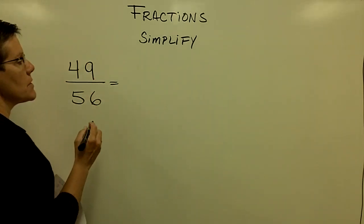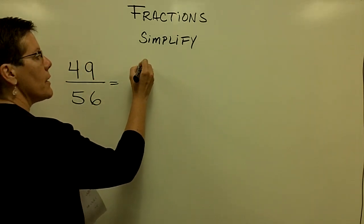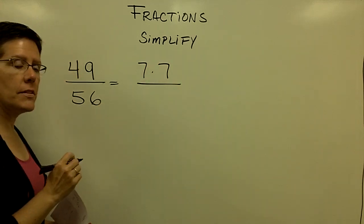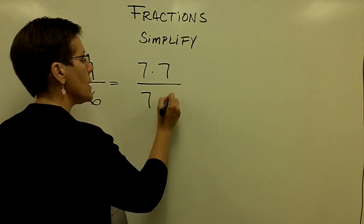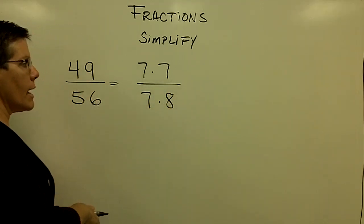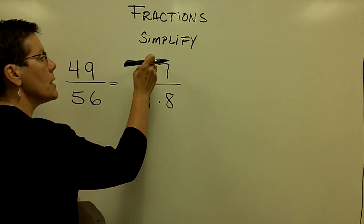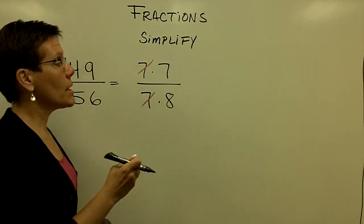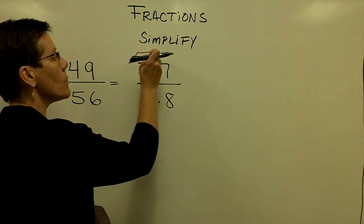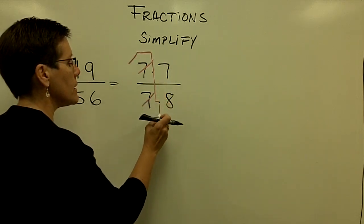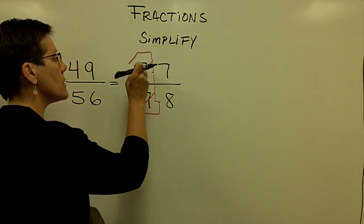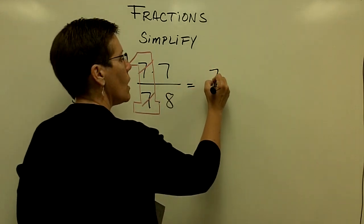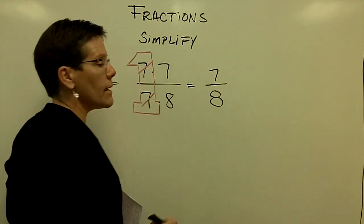49 over 56. In the numerator, I can factor the 49 into 7 times 7, and I can factor the denominator into 7 times 8. Then I can see that I can remove the common factor of 7 on the top and on the bottom, because they are equivalent to the number 1. I can reduce this fraction to 7 over 8.